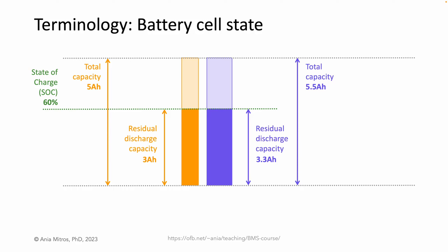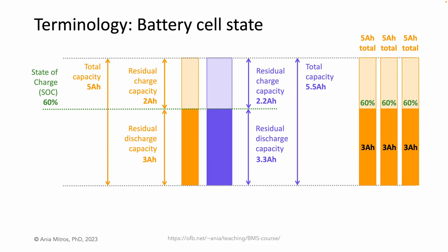Residual discharge capacity is how many amp hours we can pull out by discharging. There is also a term for how many amp hours we can put into the battery by charging — how far we are from fully charged — called residual charge capacity. Sometimes people refer to capacity in amp hours and state of charge in percent interchangeably. You can do that for cells of equal capacity, but when cells are not identical, a given state of charge maps to different residual capacities for the two cells.